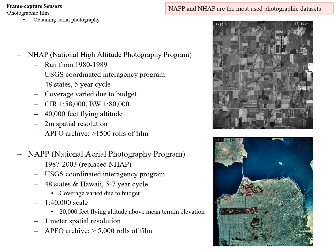Two big USGS photographic datasets are NHAP and NAP. NHAP ran from 1980 to 1989, covering 48 states — not Alaska and not Hawaii — every five years, with coverage varying by budget. They collected 1:58,000 color infrared and 1:80,000 black and white images at a 40,000-foot flying altitude, giving about 2-meter spatial resolution.